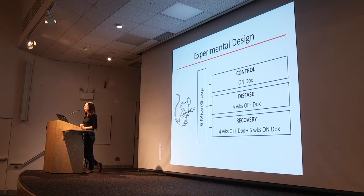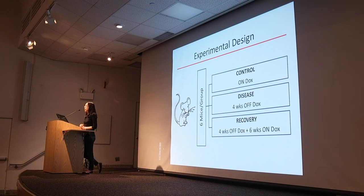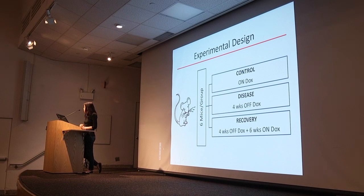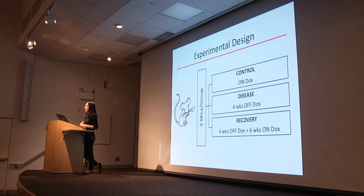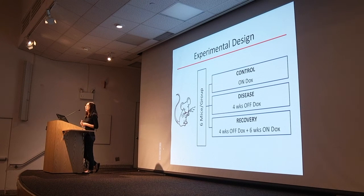In my experiment, I have three treatment groups. The transcriptomes of the disease and recovery mice will both be compared to control transgenic mice that never express the transgene by means of a doxycycline-only diet. Disease mice will be studied at four weeks off dox — a time point where we see axonal dieback but prior to frank motor neuron loss. Recovery mice will be studied at four weeks off dox plus six weeks on dox, which is the time point after recovery.